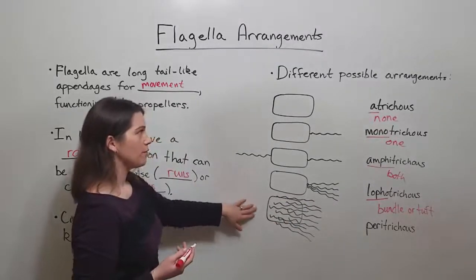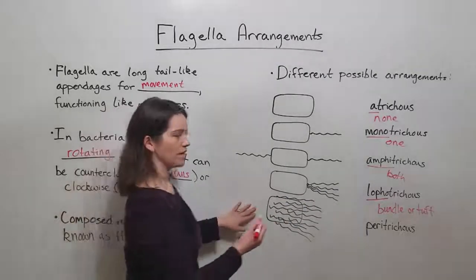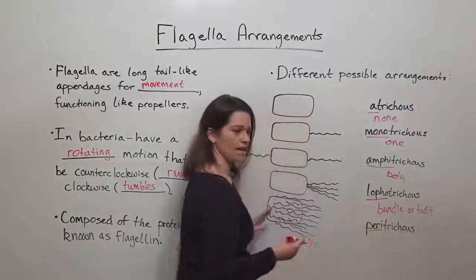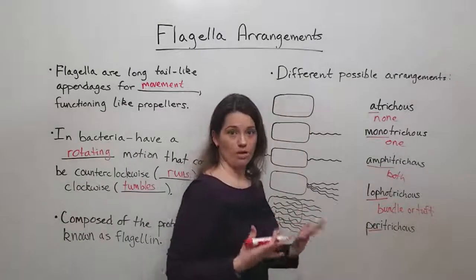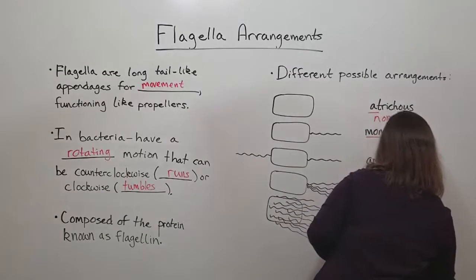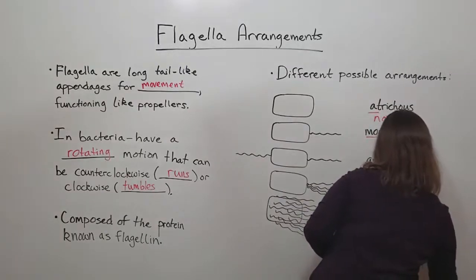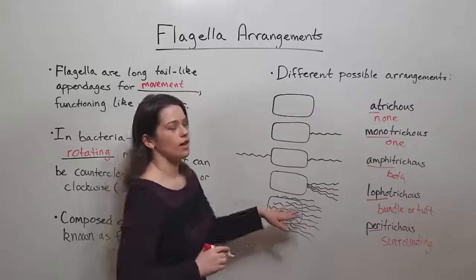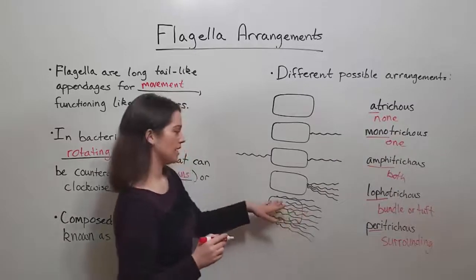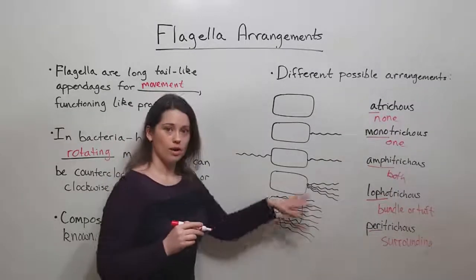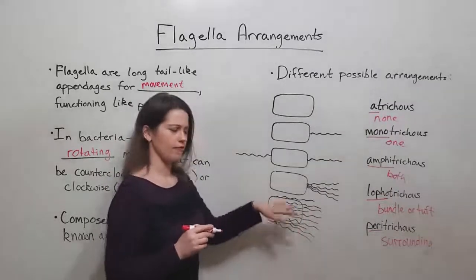The fifth possible arrangement is peritrichus, with 'peri' meaning all around or surrounding. You can see in a peritrichus arrangement there are flagella all around the surface of the cell.